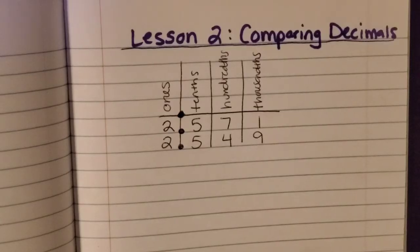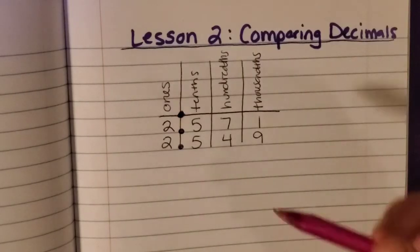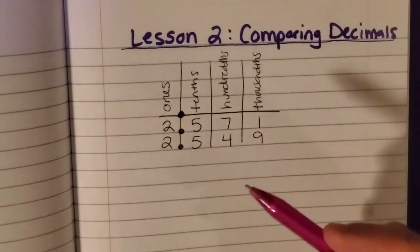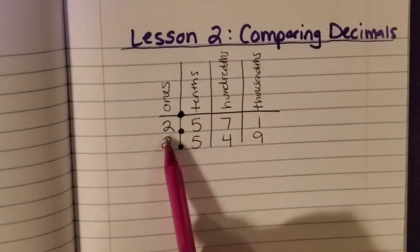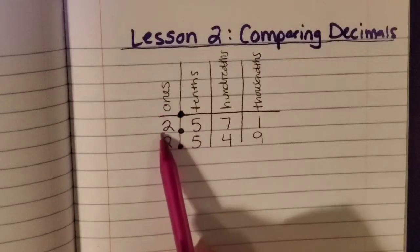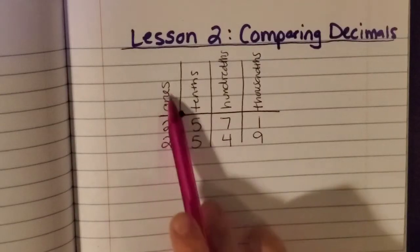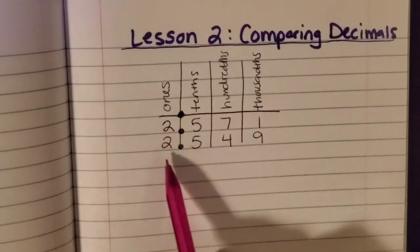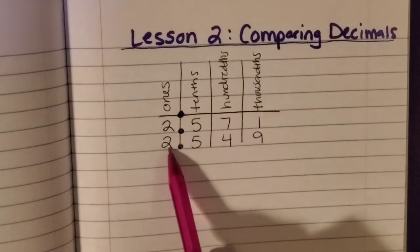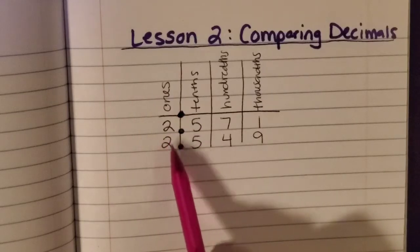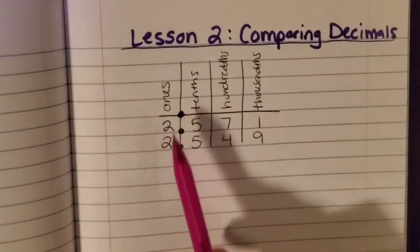So one really important thing to understand is that we want to start with the biggest place value. So we want to start by comparing the whole numbers, the ones, and right here I have two and two. So I can't compare those two, they're the same.